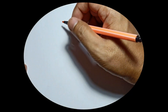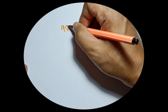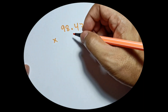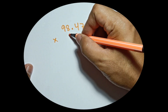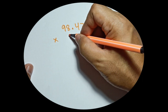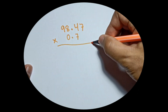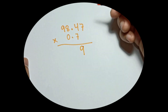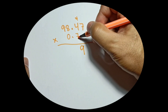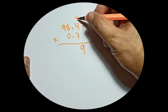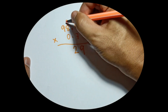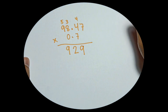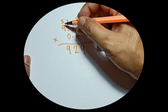For the third example, let's say you have 98.47 times 0.7. Starting with the first digit 7: 7 times 7 is 49, carry 4 on top of 4. 7 times 4 is 28 plus 4 is 32, carry 3 on top of 8. 7 times 8 is 56 plus 3 is 59, carry 5 on top of 9. Then 7 times 9 is 63 plus 5 is 68.